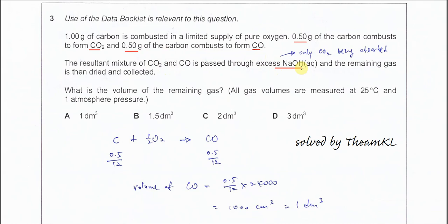You need to understand the acidic nature of CO2. CO2 is acidic gas, so it will be absorbed by the sodium hydroxide solution, and the gas that remains will be carbon monoxide, the CO. So what is the volume of the remaining gas?